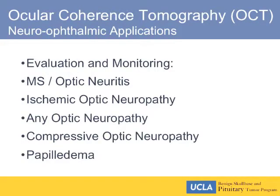Ocular coherence tomography has already found a variety of neuro-ophthalmic applications in terms of monitoring MS patients, ischemic optic neuropathy patients, really any optic neuropathy, and compressive optic neuropathy. I've found it to be of great utility recently in following patients with papilledema. We're always trying to grade whether the papilledema is worse or better, and the appearance of the thickness of the retinal nerve fiber layer on the OCT study is much more sensitive than a two-dimensional photograph viewed through the ophthalmoscope.